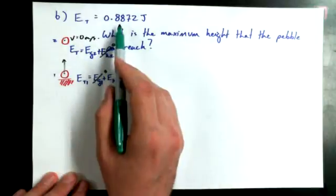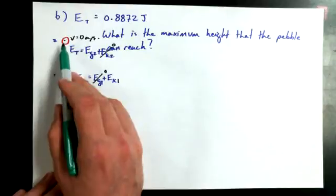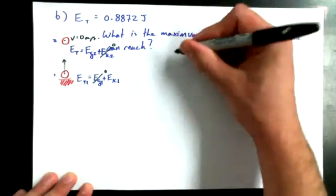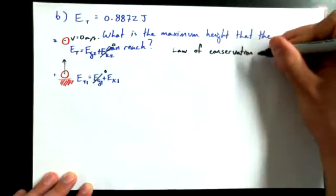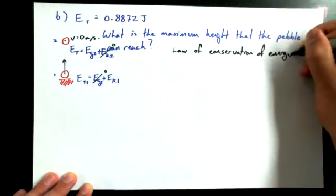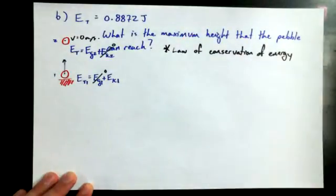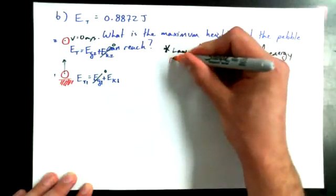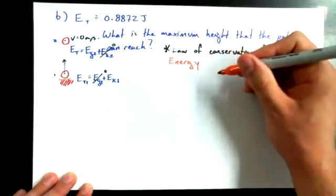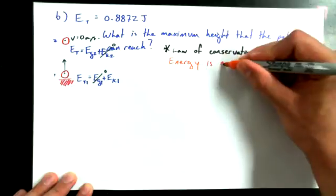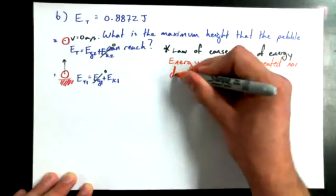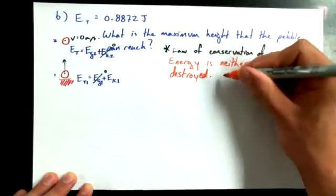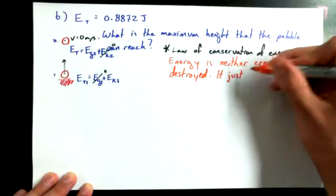So if I know how much total energy I had halfway up, as we found in part A, how much total energy do you suppose I have at the top? Same as at the bottom. And here's the rule. We call it the law of conservation of energy. So I want to write it out, just so that we have it. It just says that energy is neither created nor destroyed. And we could add on to that, it just changes forms.